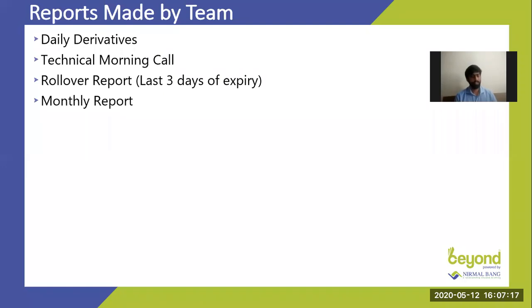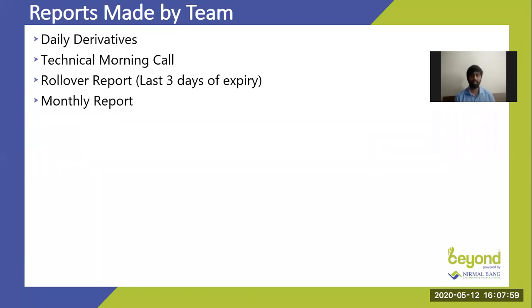There are four types of reports generated by our team. One is the derivative daily report that comes every day. There's a technical morning call which also comes every day. Then there are rollover reports — three reports: on Wednesday one day before expiry, Thursday on the day of expiry, and on the first day of the new expiry. The most important from analysis terms for the whole expiry is the last one. Then comes the monthly report which the fundamental, technical, and derivatives team all make together. It gives a view of what we think will happen in the expiry from fundamental, technical, and derivative perspectives.